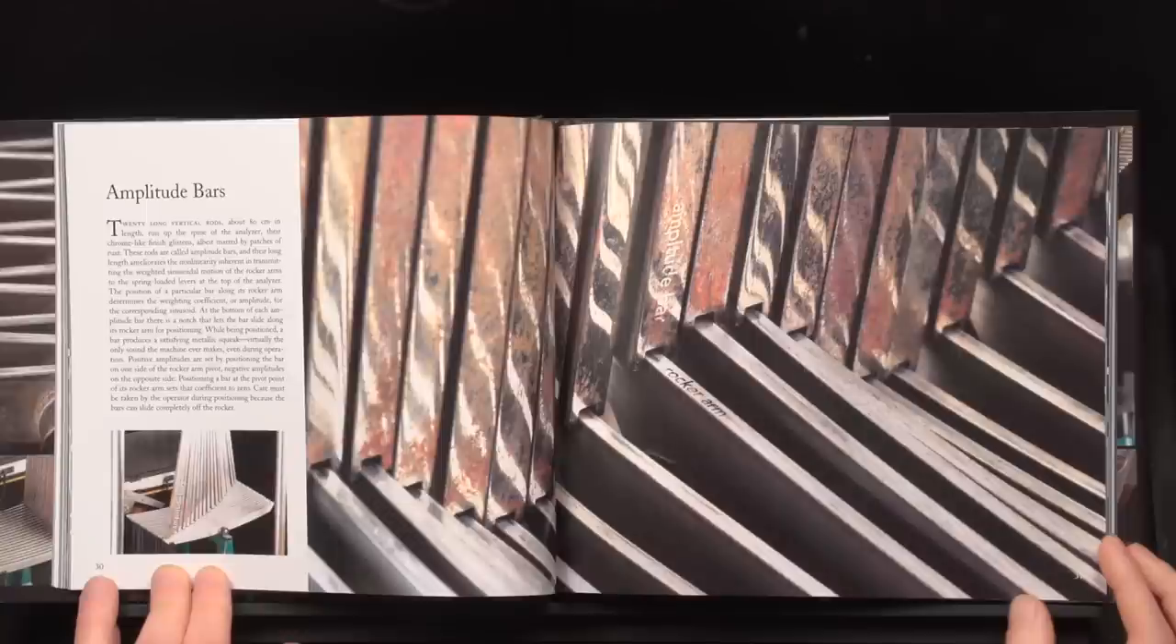One reader asked what holds the amplitude bars in place. It's just friction. The springs at the top of the machine press them lightly against the rocker arms. In fact, you can sweep the amplitude bars out past the ends of the rocker arms. It's alarming when it happens. The amplitude bars crash into the base of the machine. The first time I did this, I thought I'd broken the analyzer, but the machine is resilient. Just put the bar back on the rocker arm and it's fine.